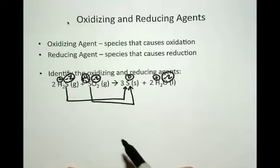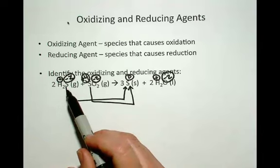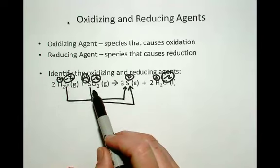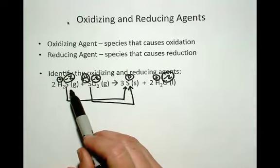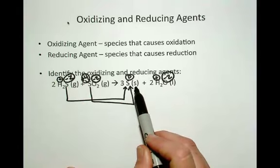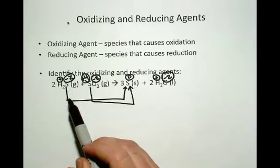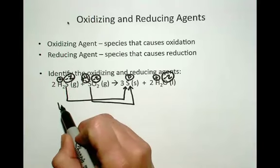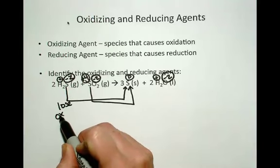So which is undergoing oxidation, hydrogen sulfide or sulfur dioxide? And in this case, the sulfur is going from a minus 2 to a 0. That means it must be losing electrons. So if it loses electrons, then we know it's undergoing oxidation.